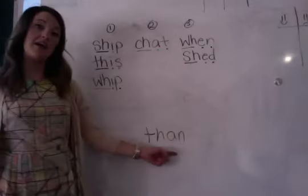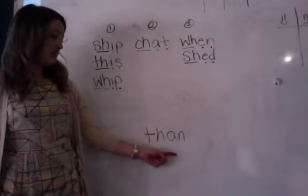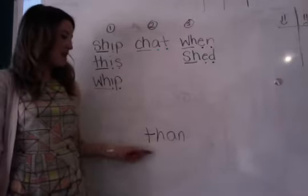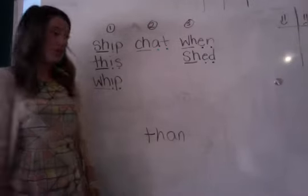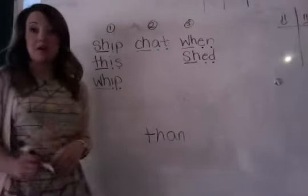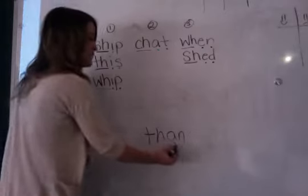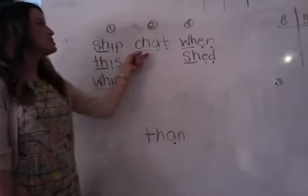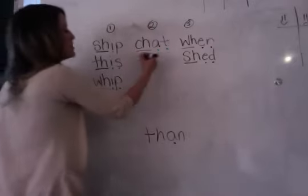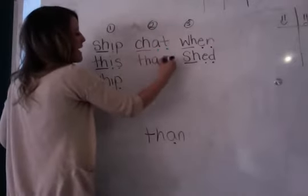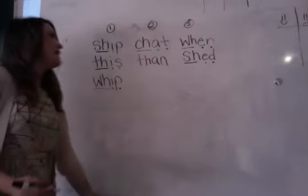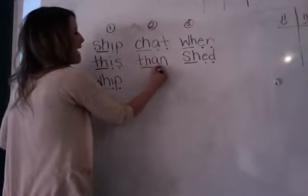This is the word van. Say van. Now say the sounds for van: V, A, N — van. Where does van go? You are absolutely right — this one letter right here says A, just like in chat. Say and write van under column two: V, A, N — van. Now let's dot and dash: V, A, N.